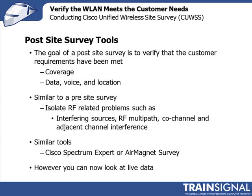The goals of the post-site survey are to verify coverage — things like cell overlap, signal strength at the edge of the cell — and to verify whether you can actually support the services the customer wants: data, voice calls, and location services. To do that, we'll look at many of the same things from our pre-site survey: interference, RF spectrum, wireless channels, and whether we're suffering multipath or co-channel interference. We can use similar tools — like Cisco Spectrum Expert or AirMagnet Survey. One critical difference is that the system has been deployed, so we now have an opportunity to look at live data.